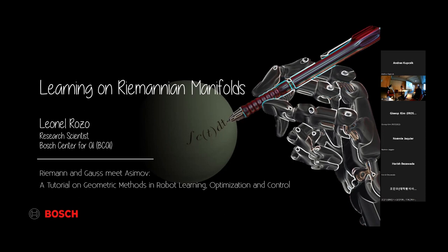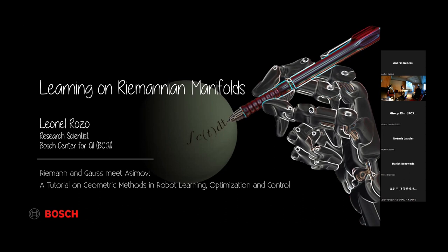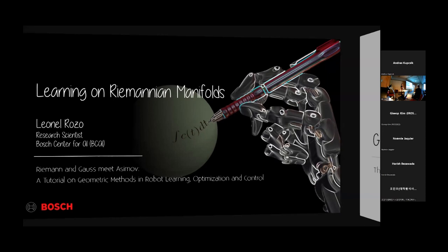We're going to have two blocks. First it's going to be my talk, which is actually learning on Riemannian manifolds. The next talk by Sarin is going to be about learning Riemannian manifolds — just to make that distinction upfront. Let me get started with probably the most basic learning algorithm we can think of for Riemannian manifolds, which is geodesic regression.